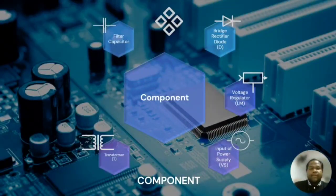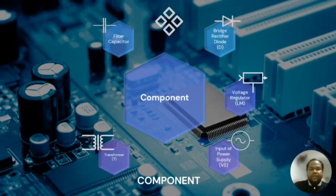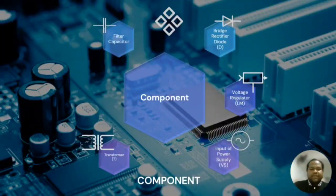My name is Muhammad Saifah Ben-Hanif, and I will talk about the components in the circuit. First is the filter capacitor. It plays a crucial role in enhancing the stability of the DC voltage output by smoothing out the variation or ripple in the DC voltage that originates from the bridge rectifier. Second is the bridge rectifier diode, a component designed to convert AC to DC, which is pivotal for electronic applications where consistent and controllable DC voltage is required.